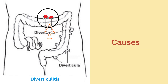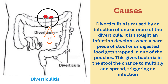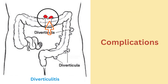Diverticulitis is caused by an infection of one or more of the diverticula. It is thought that an infection develops when a hard piece of stool or undigested food gets trapped in one of the pouches, giving bacteria in the stool the chance to multiply and spread, triggering an infection.